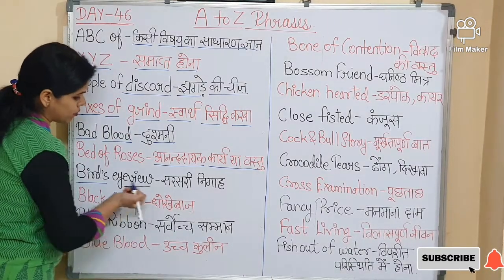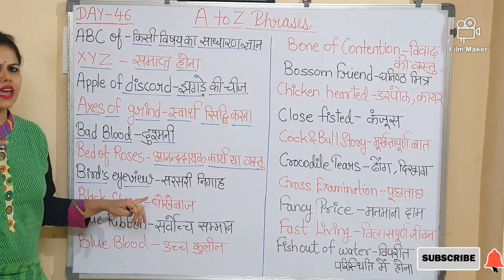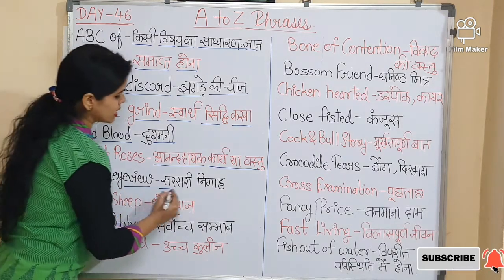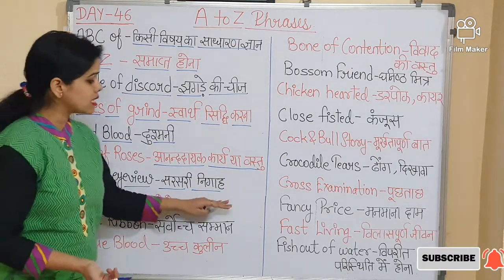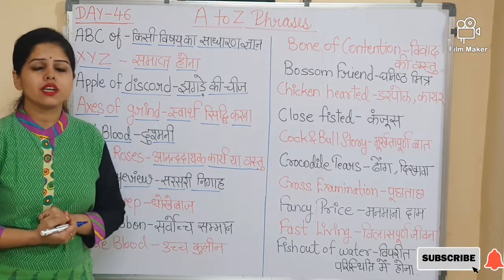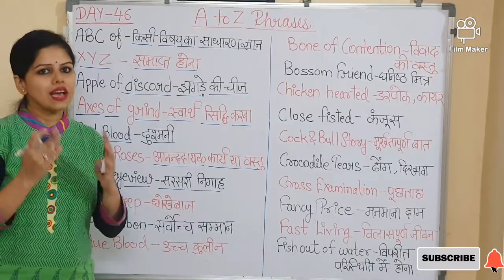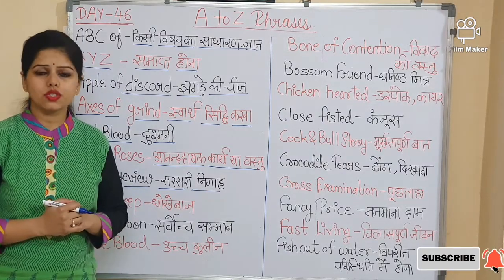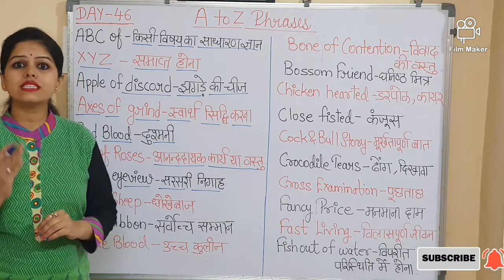Next is 'Bird's eye view'. You can guess from the name — think of a vulture or eagle looking down. Bird's eye view means sarsari nigaah — a quick or overall glance. Sentence: She found her pen from the storage room. Yes, I am sure she has a bird's eye view.